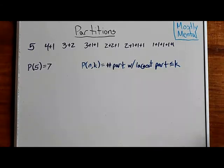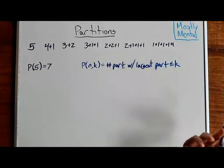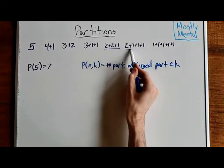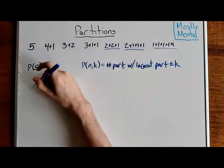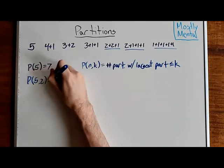So, for example, if we're looking at p of five, two, that's all of the partitions of five, where the largest part is, at most, two. Which include this one, this one, and this one. So, p of five, two, is three.